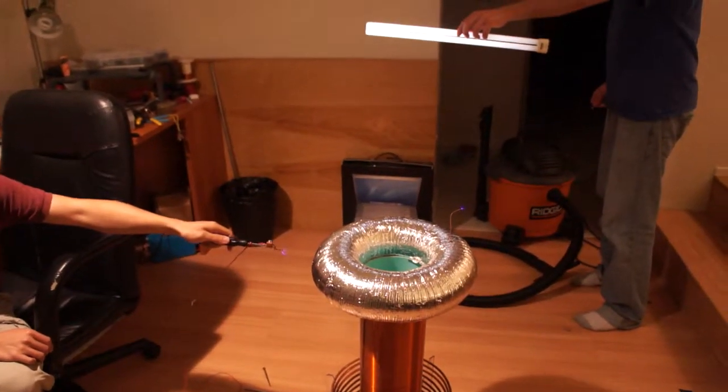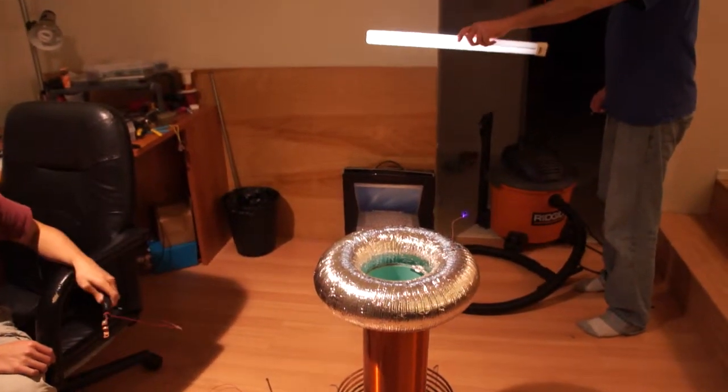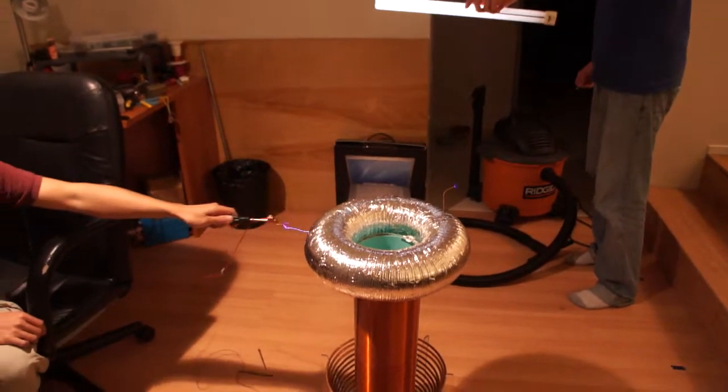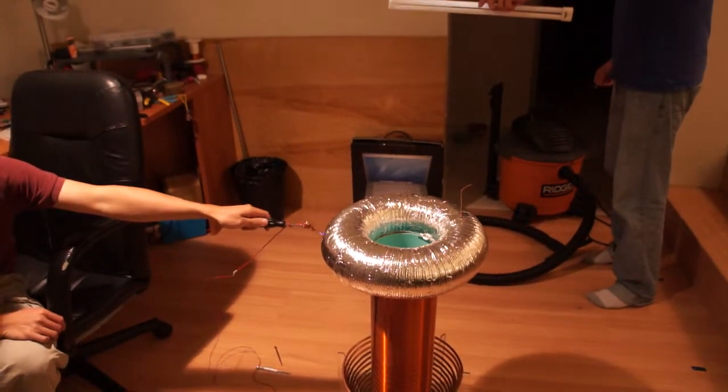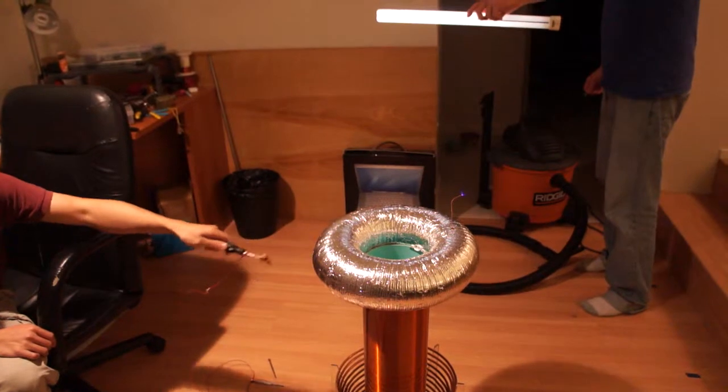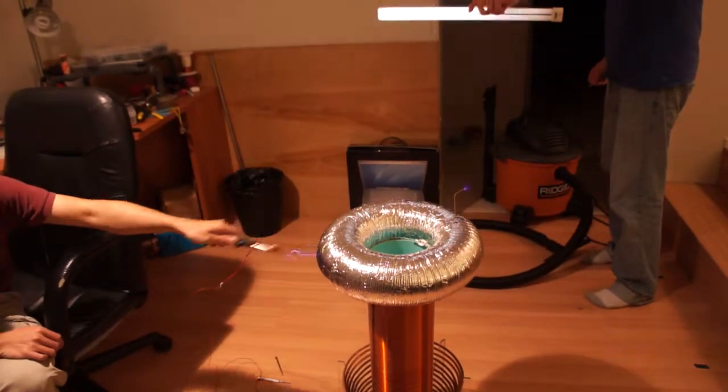You can't really see it on the video, but the fluorescent radiates or receives a lot less RF to light it when Chris is drawing arcs. Thanks for watching!